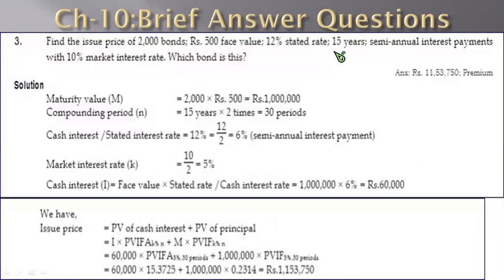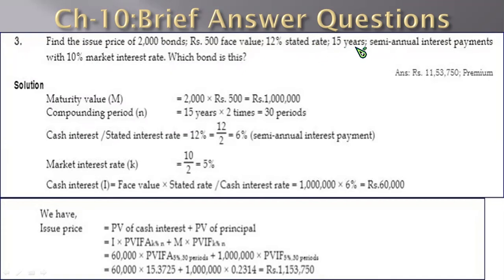Question number 3: find the issue price of 2,000 bonds, Rs.500 face value, 12% stated rate, 15 years maturity, semi-annual interest payment, with 10% market interest rate.